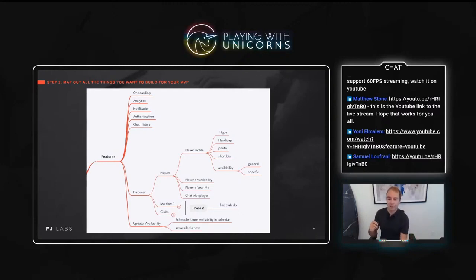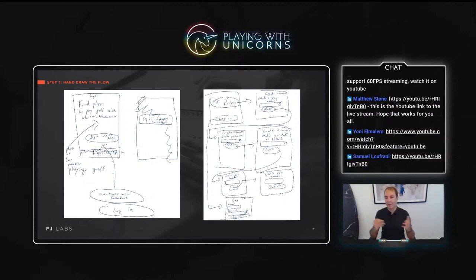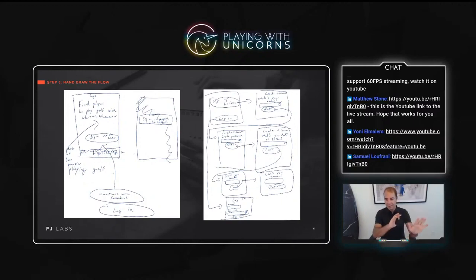Once we defined this feature set, we hand-drew the entire flow. And I apologize for my horrible handwriting. This is me starting with: okay, this is the first page of an app. We're going to have a logo, a description of the product, and then a sign-in or sign-up page. From there, you create an account — in this case not using Facebook, so you put in your email, password, date of birth, gender, and name. I decided it didn't make sense to fill in a full profile at this point — we do that later, copying some of the flows and gamification I saw in other apps.